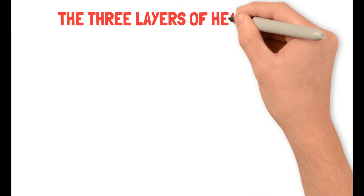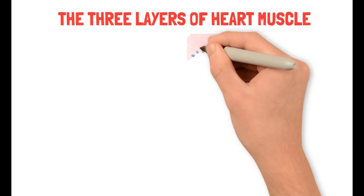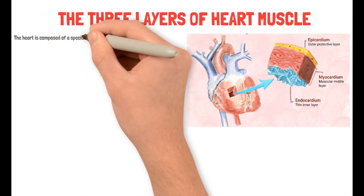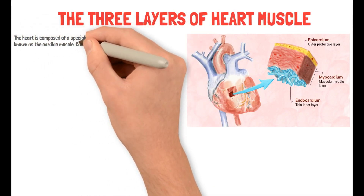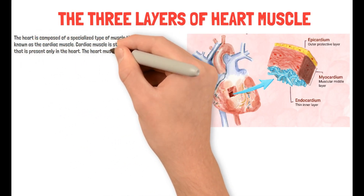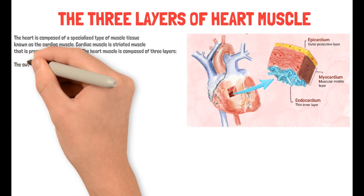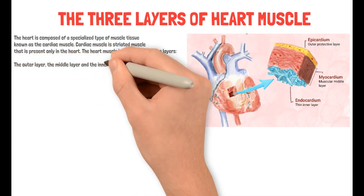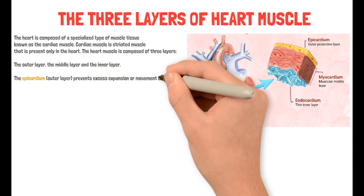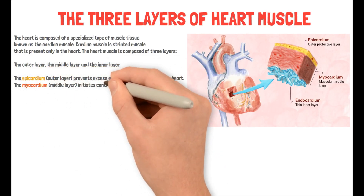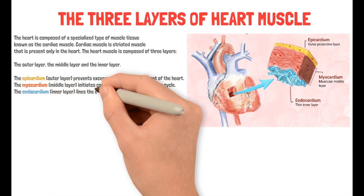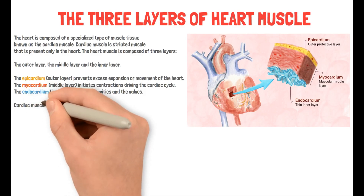After discussing the basic anatomy of the heart, let's talk about what the cardiac muscle is made of — the three layers of the heart muscle. The heart is composed of a specialized type of muscle tissue known as cardiac muscle, which is a striated muscle present only in the heart. The heart muscle is composed of three layers: the epicardium (outer layer), which prevents excess expansion or movement of the heart; the myocardium (middle layer), which initiates contractions driving the cardiac cycle; and the endocardium (inner layer), which lines the cavities and the valves.